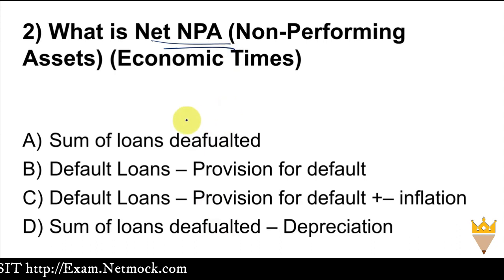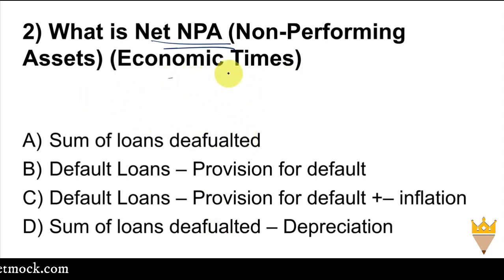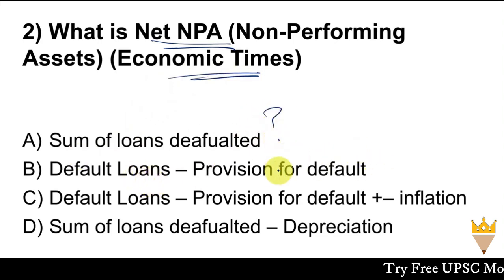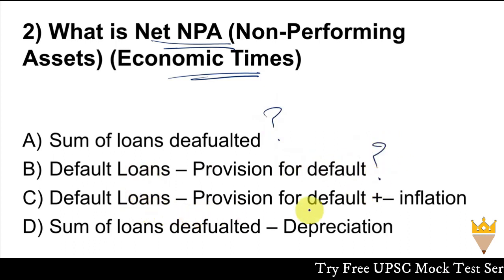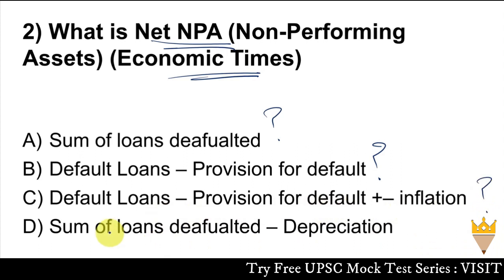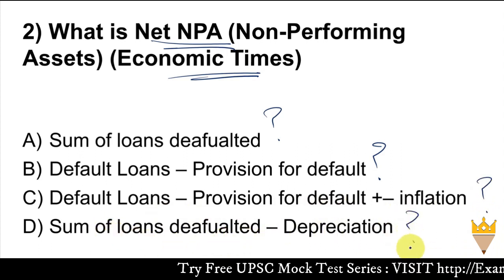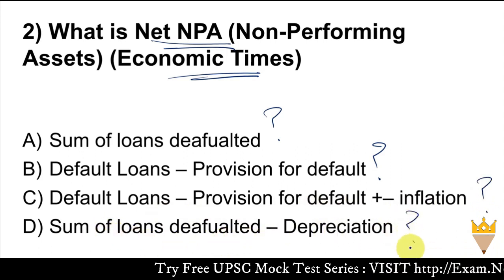Here is a question: What is Net NPA, that is Net Non-Performing Assets? There are 4 options. Option 1: Sum of Loans defaulted. Option 2: Default Loans minus Provision for Default. Option 3: Default Loans minus Provision for Default, plus or minus Inflation Adjustment. Option 4: Sum of Loans defaulted minus Depreciation. Take 10 to 15 seconds to think, then we will discuss.